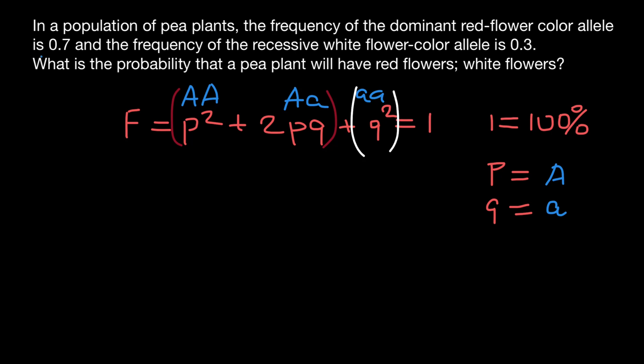According to our problem, we know that the frequency of the dominant allele for red color is 0.7, and the frequency of the recessive allele for white color is 0.3. We can use these numbers instead of the letters. Today I want to show you a different method to solve this problem so you understand how we get this formula.